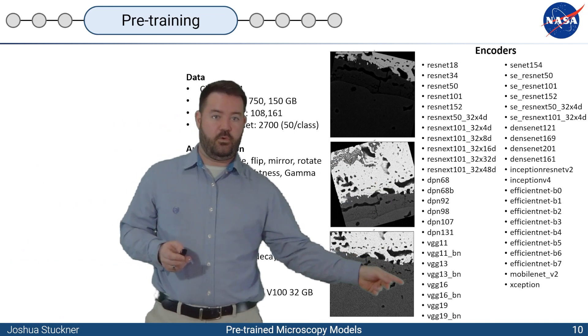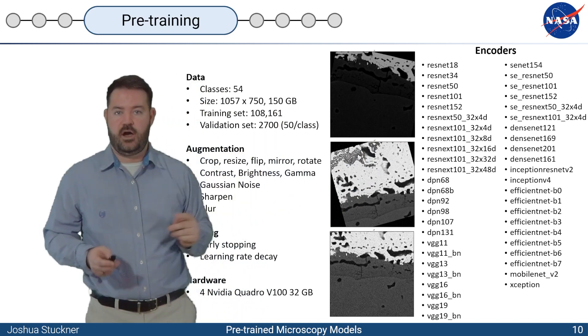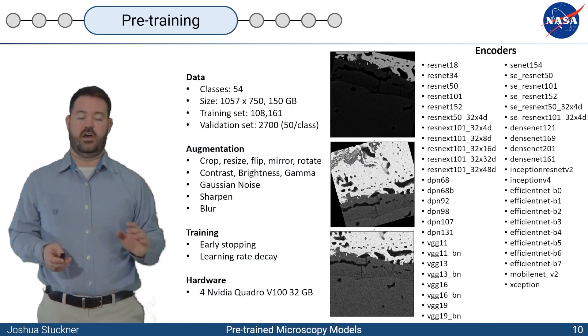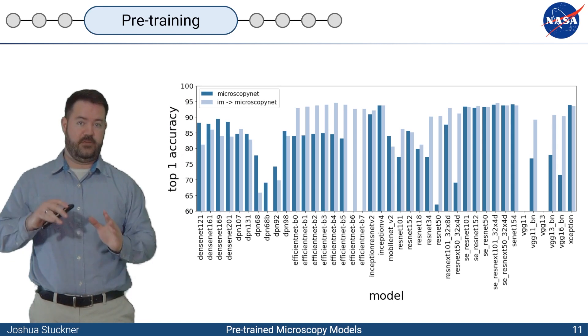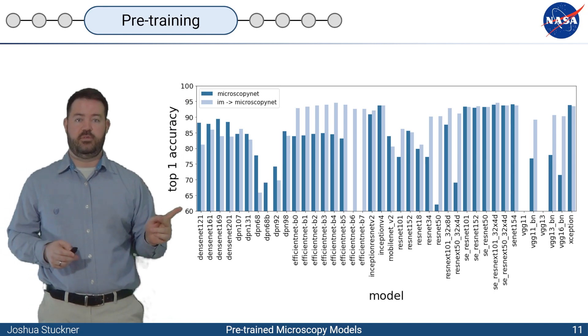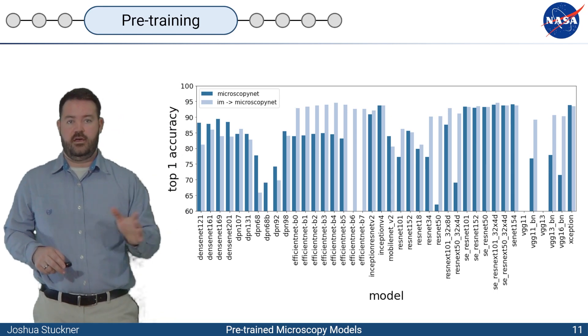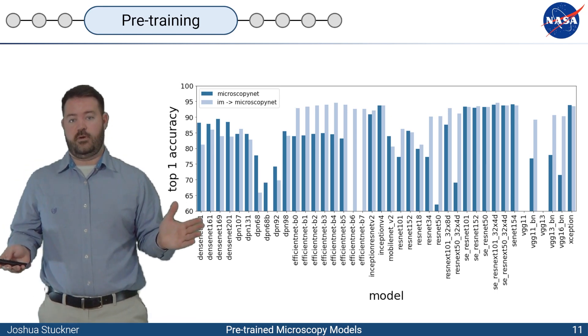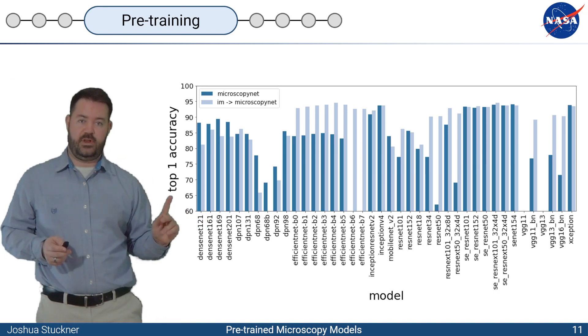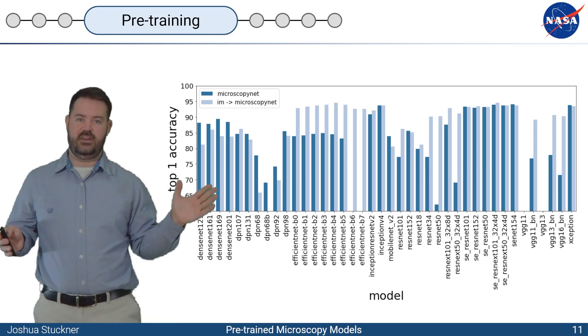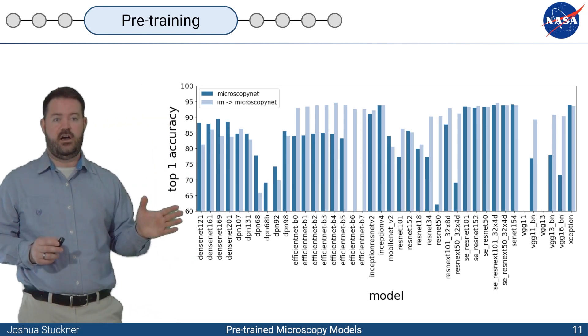And then we trained all these encoders, some of the older encoders like VGG, some of the newer ones like ResNet, and then the really new ones like Resnext or Inception. The dark blue here is when we pre-trained just on Micronet from randomly initialized encoders. And then the light blue is when we actually started with pre-trained ImageNet models and then fine-tuned them on Micronet. That way, maybe it can start from stuff that it's learned from the pictures of everyday life, and then if it needs to fine-tune some of those high-level features, it could.